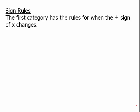First of all, what I'll call the sign rules. This first category has the rules for when the positive and negative signs of x changes. The sine of negative x equals negative sine of x, but the cosine of negative x equals just cosine of x.